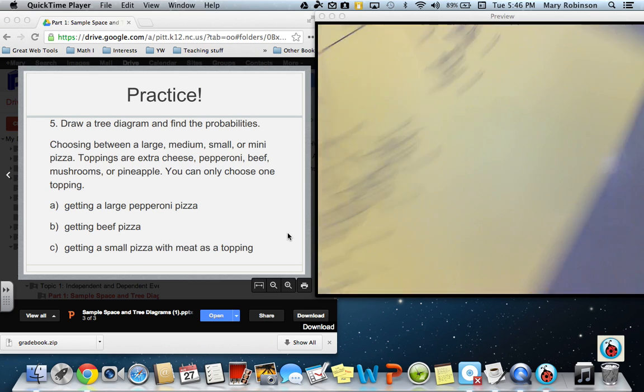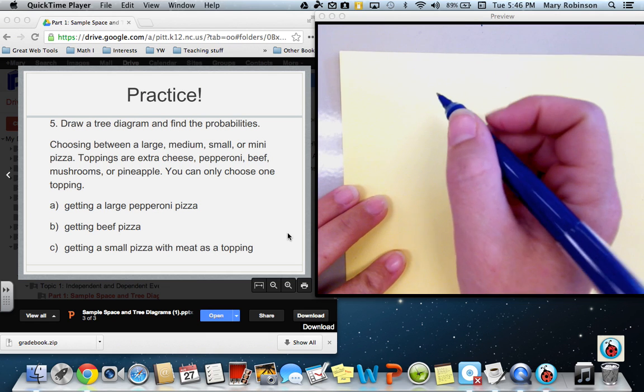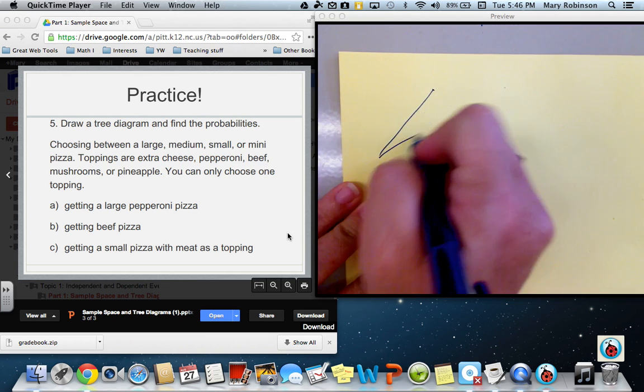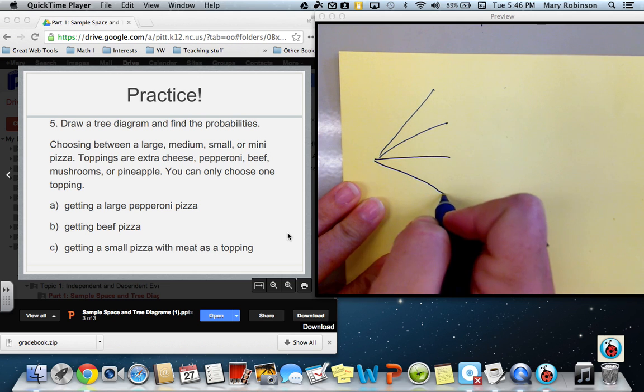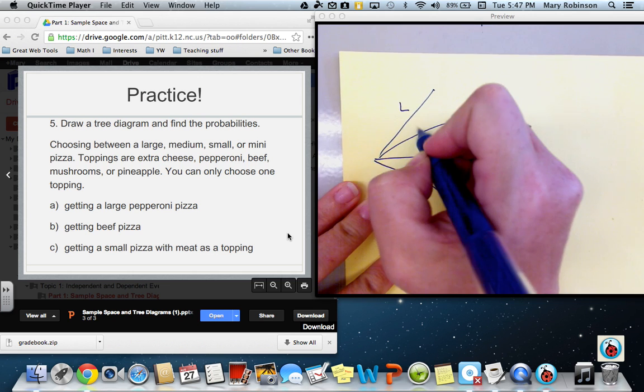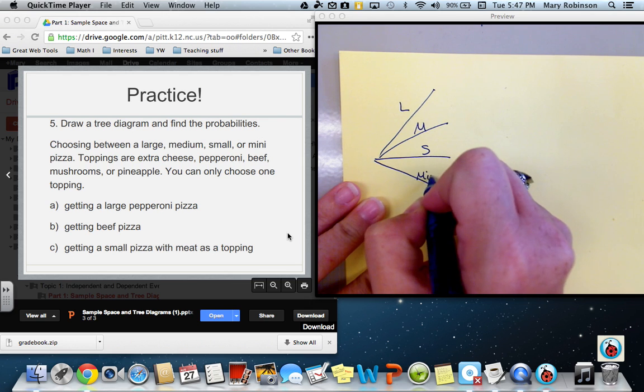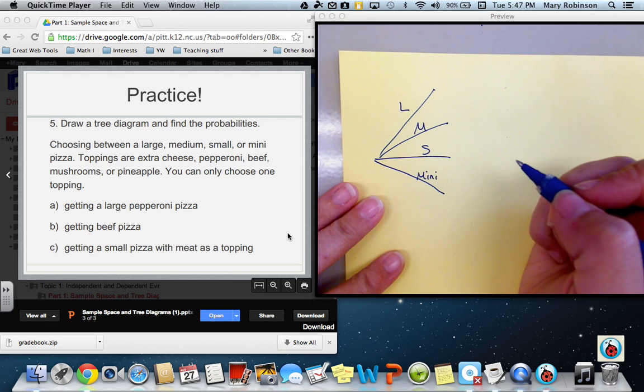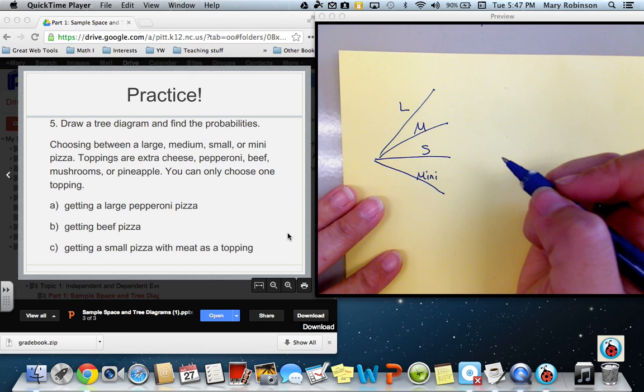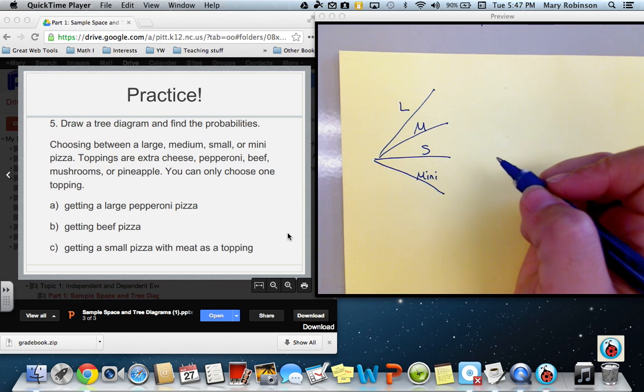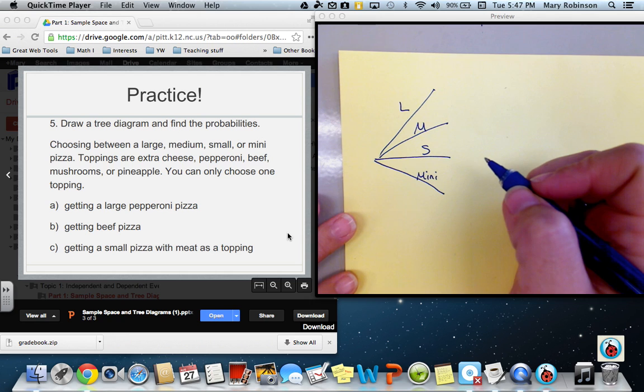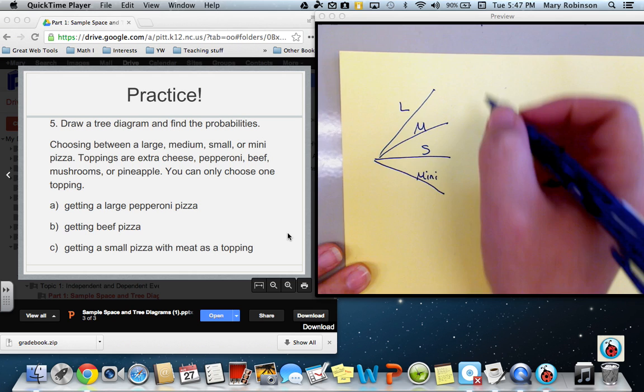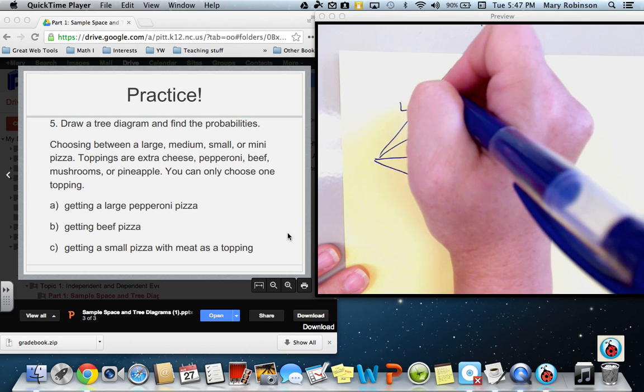We first want to draw a tree diagram and find the probabilities. So if we are asked to choose between large, medium, small, or a mini pizza, we obviously have four options, so we want to start off with four branches. So that was large, medium, small, and mini. Our toppings we could choose from were extra cheese, pepperoni, beef, mushroom, or pineapple, and you can only choose one topping. So you count up the number of toppings. One, two, three, four, five. Therefore, we need five branches from each one of these.